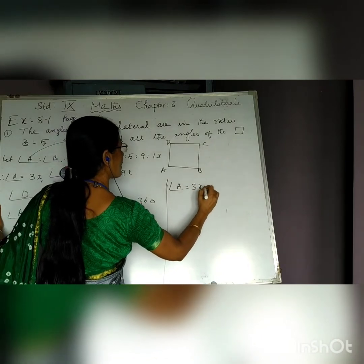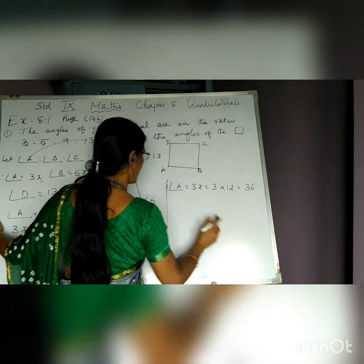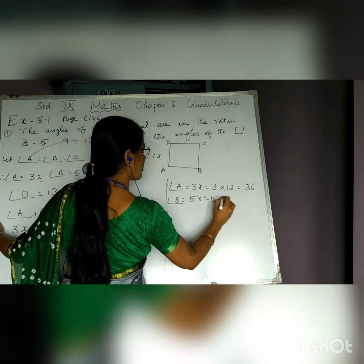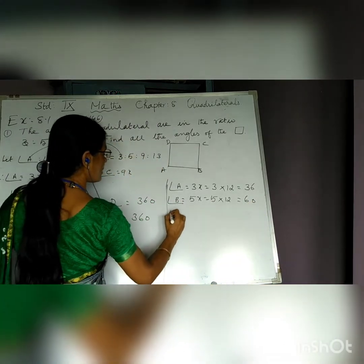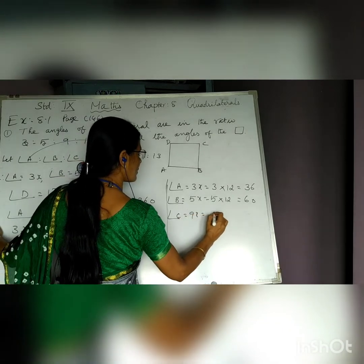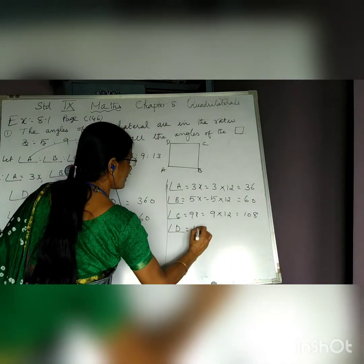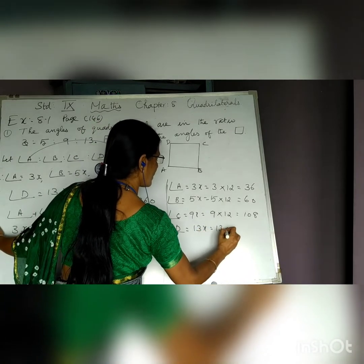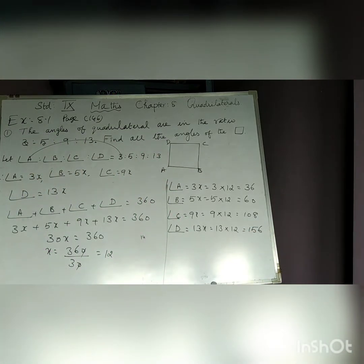Therefore, angle A is 3X and X value is 12, so the measure of angle A is 36. B is 5 times X, 5 into 12, it is 60. Angle C is 9 times X, 9 into 12, is 108. Angle D is 13 times X, which is 13 into 12, is 156. Therefore, we got the measure of A, B, C, and D as 36, 60, 108, and 156.